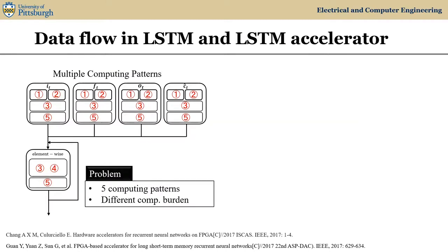Here, the computing patterns are further labeled in the LSTM data flow. In each gate, the result of computing pattern one and two will be further computed in pattern three. After activation, gate results will be further processed in pattern three and four to get the cell output. We can see that computing burden at each stage is different. The majority of the computing burden is in pattern one and two.